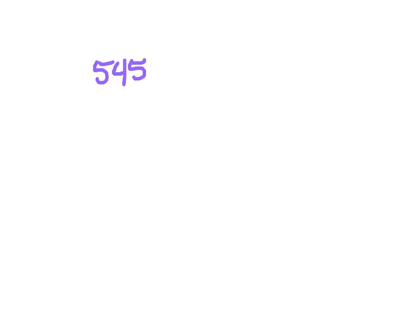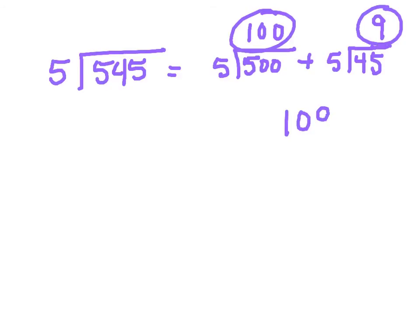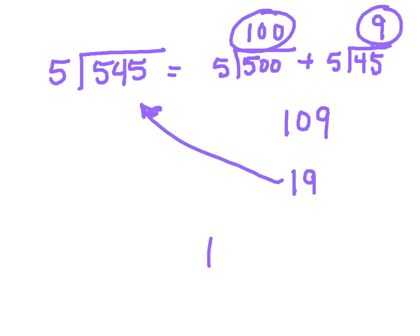Let's try 545 divided by 5. Now there's a potential pitfall here — let's see what some students might do. Let's break this down: 5 goes into 500, that's easy, plus 5 goes into 45. So 5 goes into 500 one hundred times, and 5 goes into 45 nine times. You have to add these two together to get 109. I could see some kid putting down a 1 and a 9 — we know that's not even possible. Make sure you add them correctly: 100 plus 9 gives you an answer of 109.